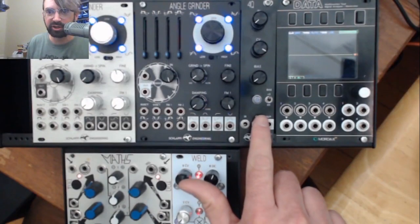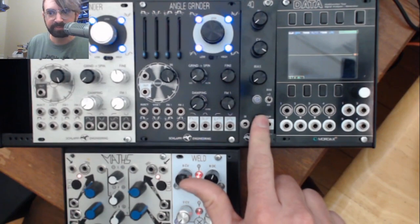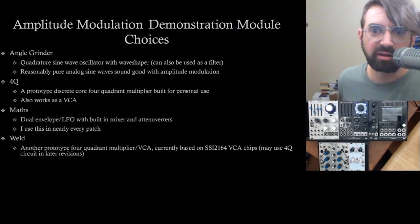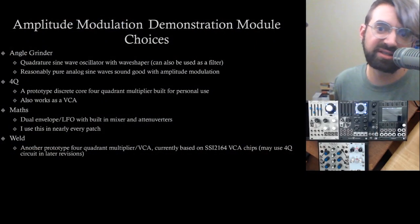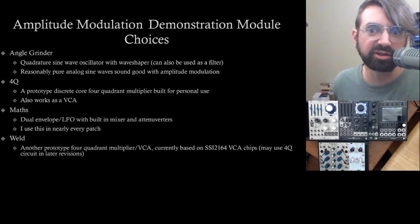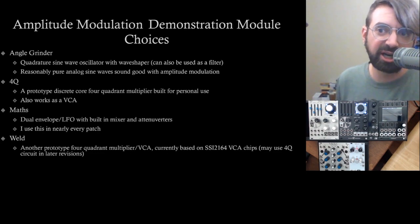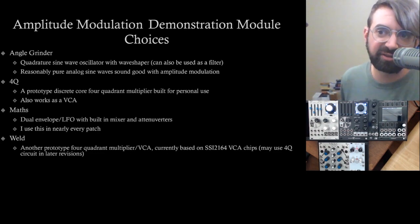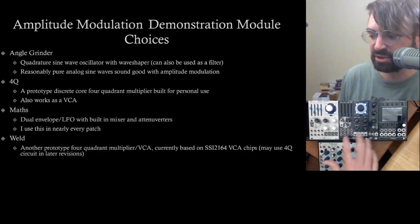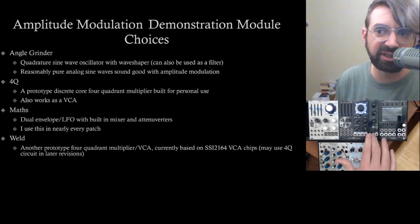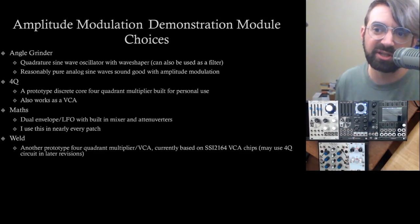The 4Q. The 4Q is a prototype discrete-core linear four-quadrant multiplier built for personal use. It also works great as a VCA. We'll see if I ever release it or do anything else with it, but it's what I'm demonstrating amplitude modulation with.